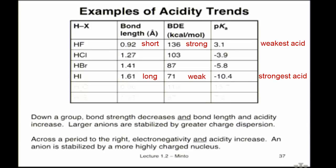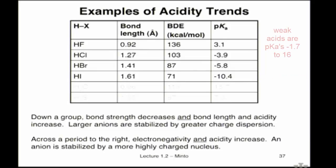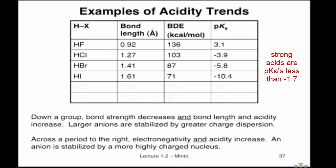You can see in this pKa trend that HF is a weak acid, using the descriptions we talked about last class for break lines. Acids with a pKa between about minus 1.7 and 16 are going to be weak acids, so HF fits in there. These other three — HCl, HBr, and HI — are strong acids, as you may recognize from freshman chemistry, and HI is the strongest one.